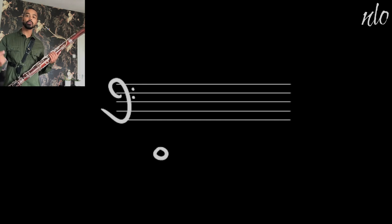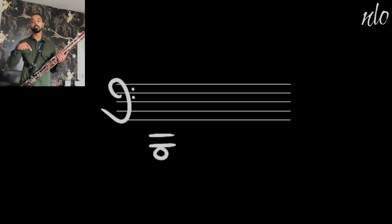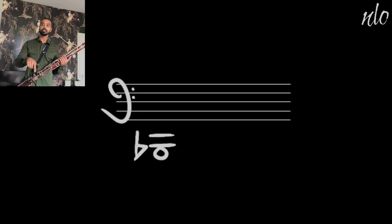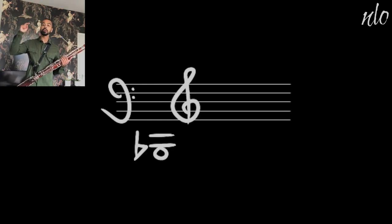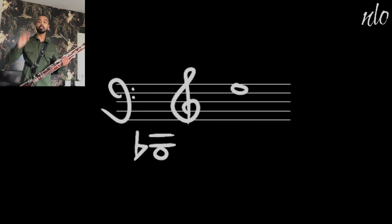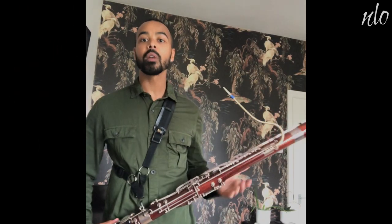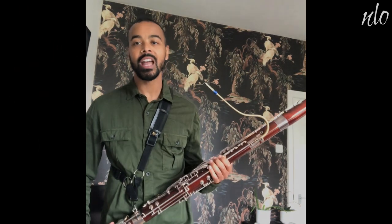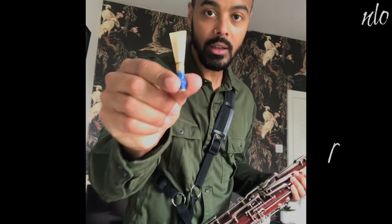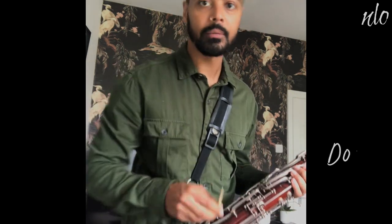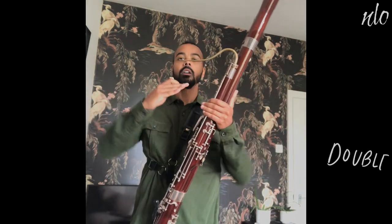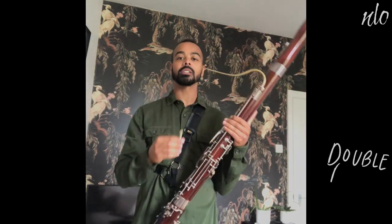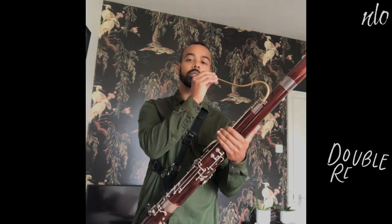The range of the bassoon goes right down from the low B-flat, below bass clef, all the way up to the E at the top of the treble clef. So it's got a range of about three and a half octaves. And like the oboe, we use a double reed, which is just one piece of cane, folded back on itself and tied at the bottom.